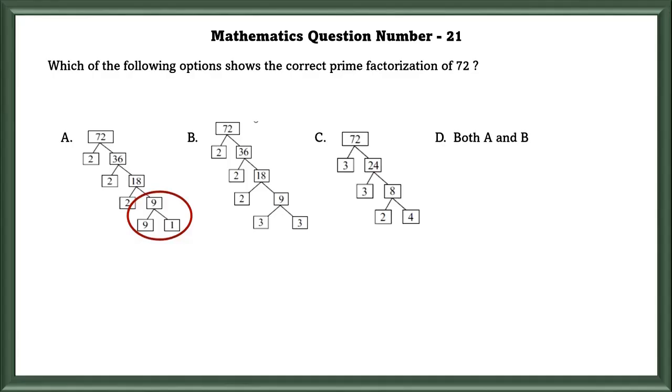In option C, 4 is also not a prime number, so it is wrong. B is the correct option.